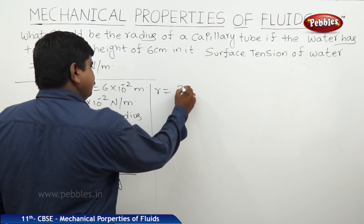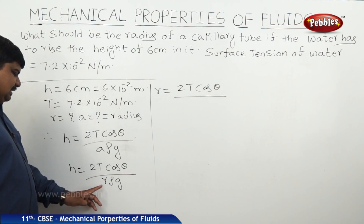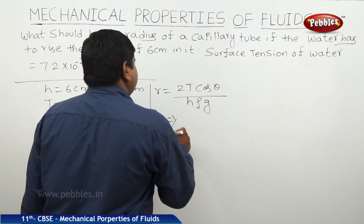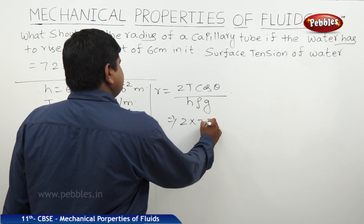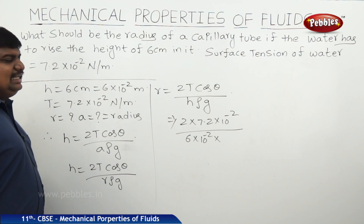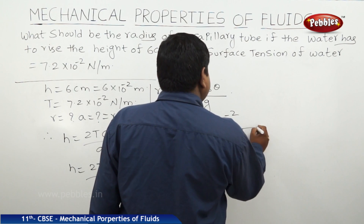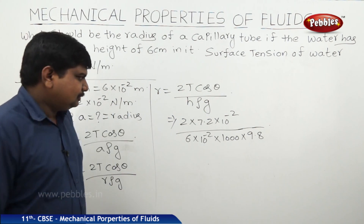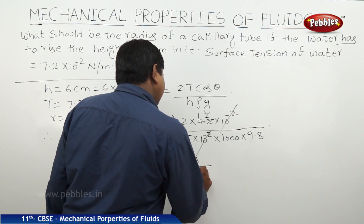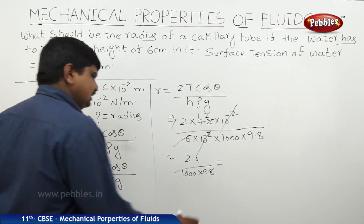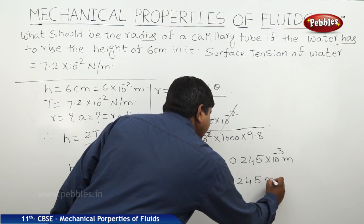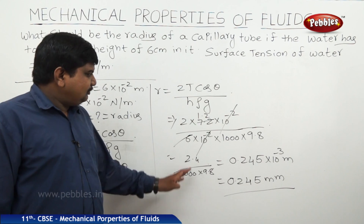Since it is a vertical rise, theta equals zero so cos theta equals 1. Substituting: R equals 2 into 7.2 into 10 to the power of minus 2, divided by 6 into 10 to the power of minus 2 into 1000 into 9.8. The powers of 10 to the minus 2 cancel, giving 2.4 divided by 1000 into 9.8, which equals approximately 0.245 into 10 to the power of minus 3 meters, or 0.245 millimeters. This is the required radius of the capillary tube for a rise of 6 centimeters.